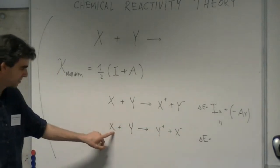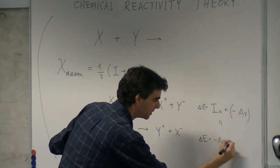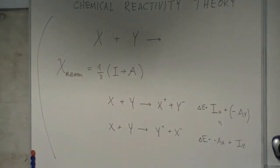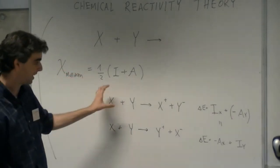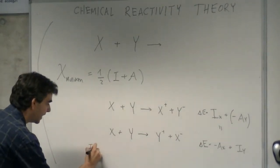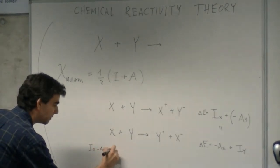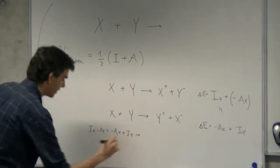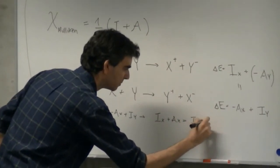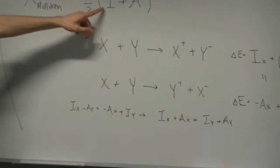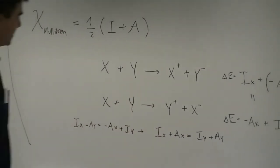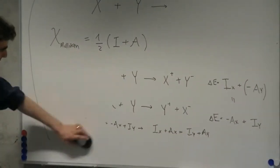So if the energy difference in the reaction — which is Iₓ minus A_Y — is equal to the energy change in the opposite transfer, which is I_Y minus Aₓ, then Iₓ + Aₓ = I_Y + A_Y. So something proportional to I + A seems like a smart choice for the electronegativity scale.